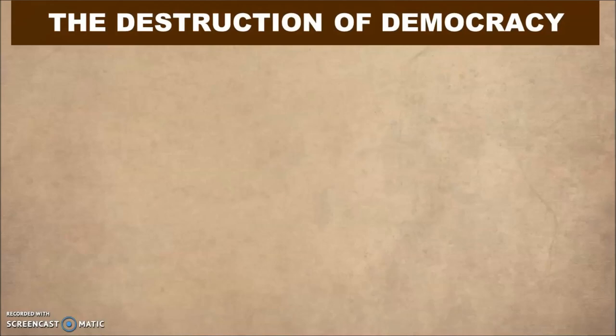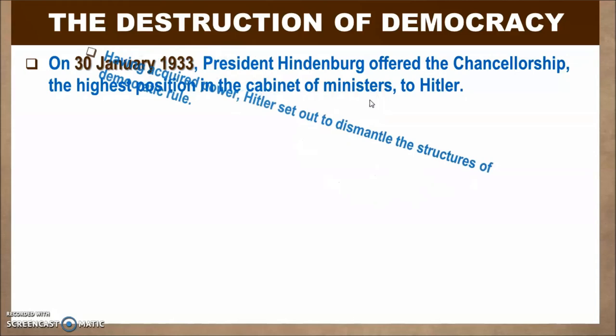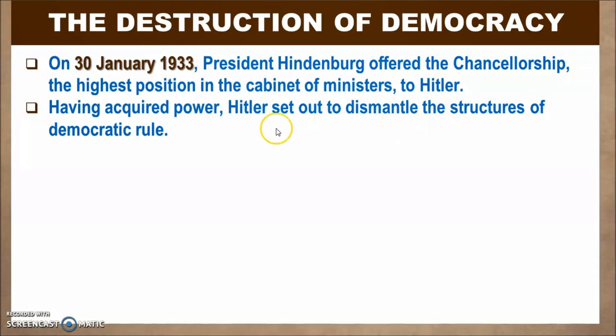Next, let's discuss the destruction of democracy. The Weimar Constitution had established a democratic setup in Germany. The events which led to the destruction of democracy in Germany began on 30th January 1933, when President Hindenburg offered the chancellorship — the highest position in the cabinet of ministers — to Hitler. Having acquired power, Hitler set out to dismantle the structure of democratic rule.